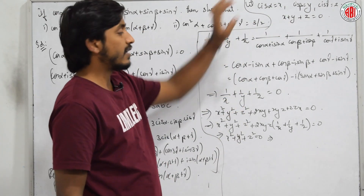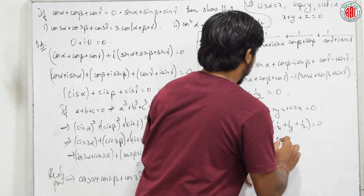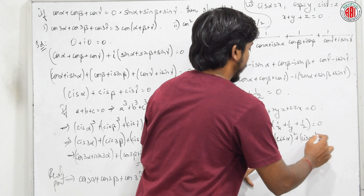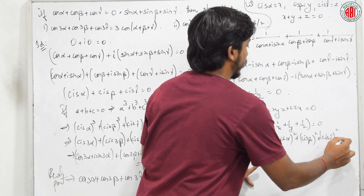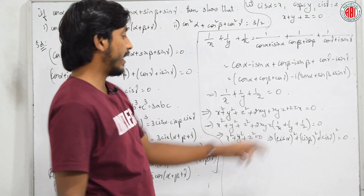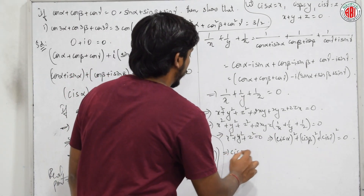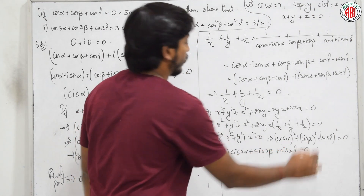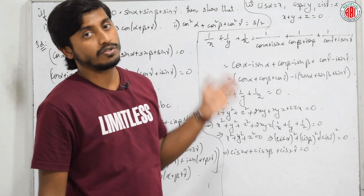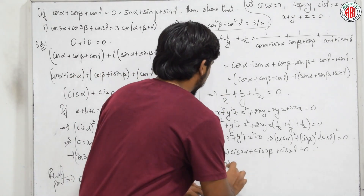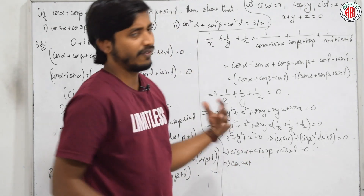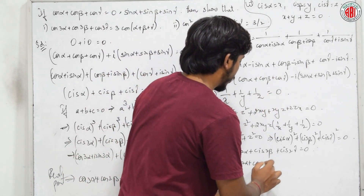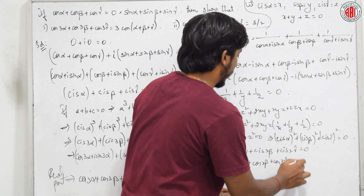Since x = cis α, x² = cis(2α). So cis(2α) + cis(2β) + cis(2γ) = 0. Expanding, cos(2α) + i sin(2α) + cos(2β) + i sin(2β) + cos(2γ) + i sin(2γ) = 0. Taking only the real part: cos(2α) + cos(2β) + cos(2γ) = 0.